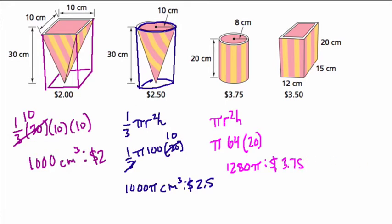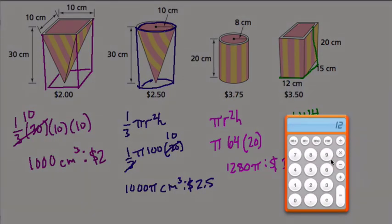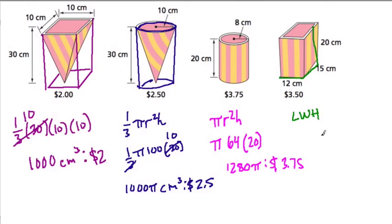And then last over here, we have a rectangular prism. And of course, that's length by the width by the height. And that's going to be 12 times 15 times 20. 12 times 15 times 20, we get 3,600. So that's 3,600 cubic centimeters for $3.50.